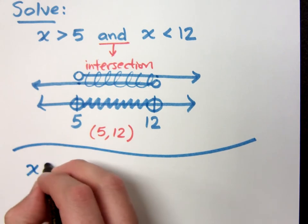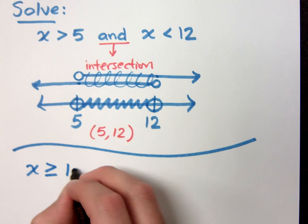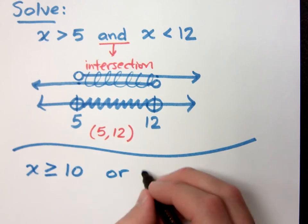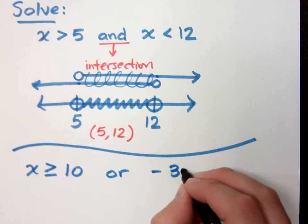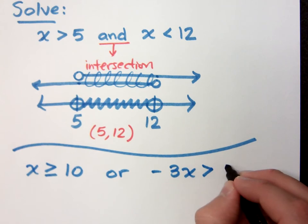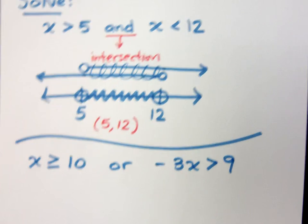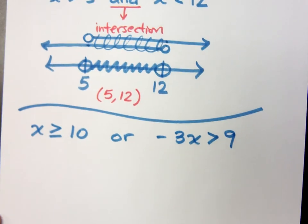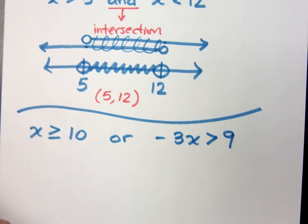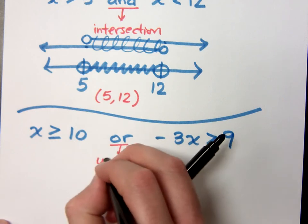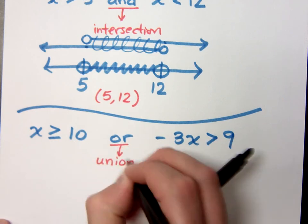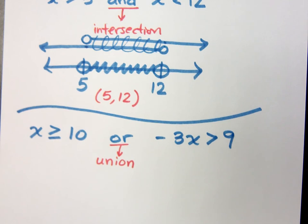Suppose I have x is greater than or equal to 10, or negative 3x is greater than 9. Well, the word or means something different than the word and. When I see the word or, I'm talking about the word union. And union means combining, putting together, and just joining everything together that you have.